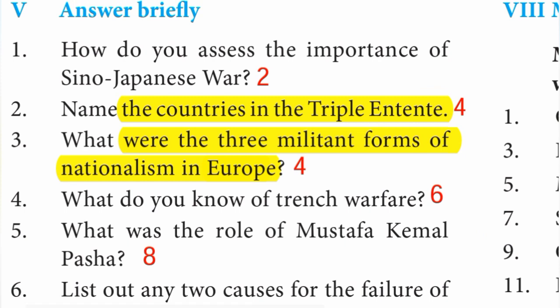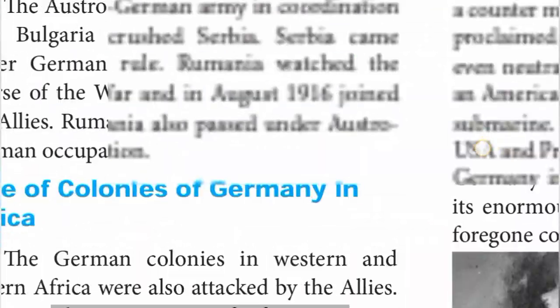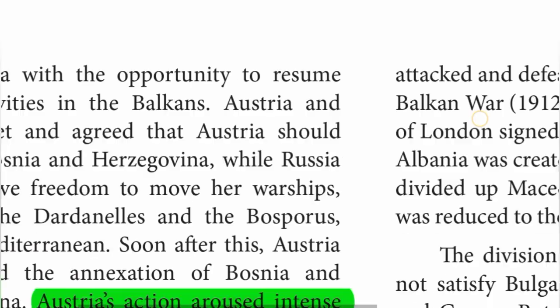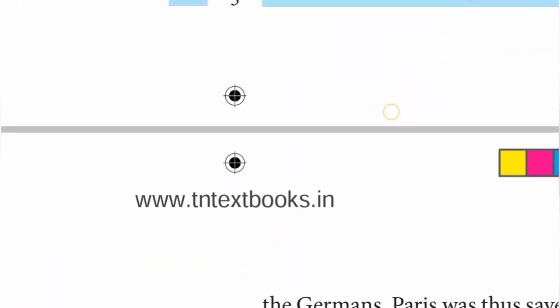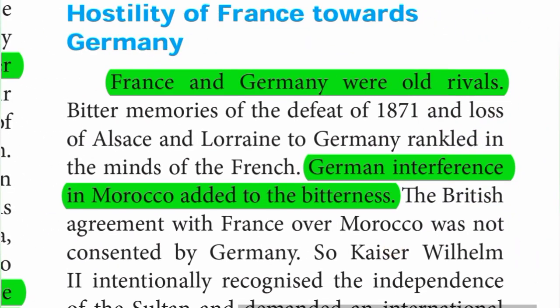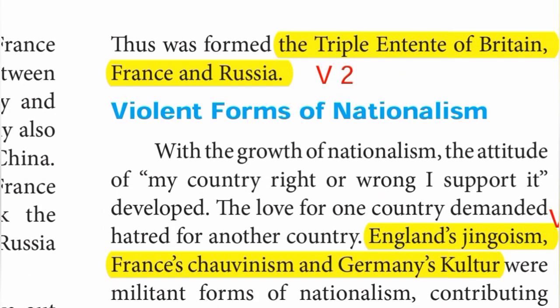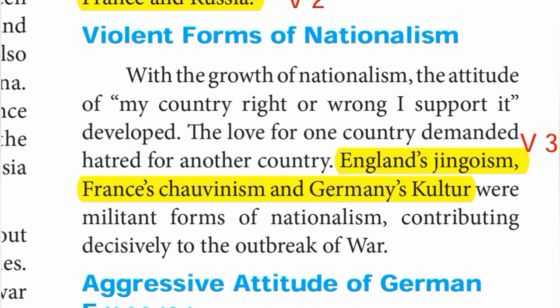Question number 3: what were the three militant forms of nationalism in Europe? See page number 4, right side — violent forms of nationalism paragraph, fourth line. England's Jingoism, France's Chauvinism and Germany's Kultur — that's the answer.